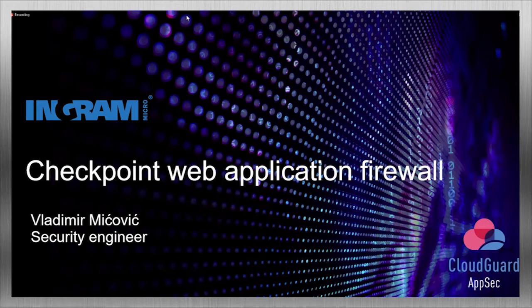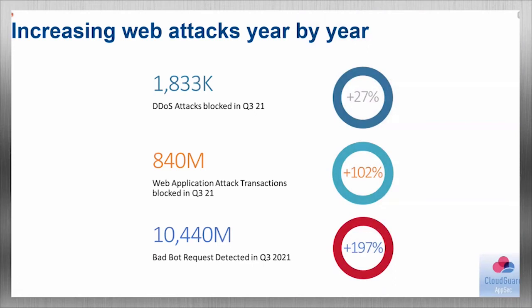Today I will present what a web application firewall is, go through some statistics, and show a great solution from Checkpoint. Security on the internet is a real challenge — websites and web applications are becoming more widespread and complex. According to some statistics, in the third quarter of 2021 we had an increase of DDoS attacks by 27 percent, 102 percent of blocked attacks, and malicious bots increased by almost 2000 percent.